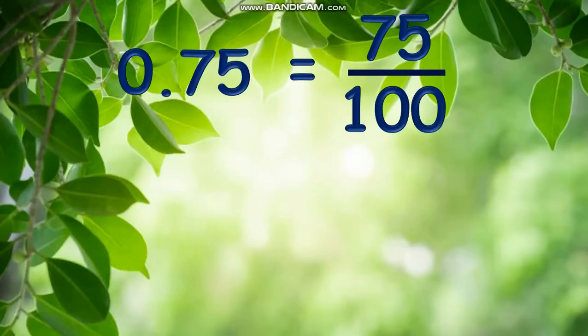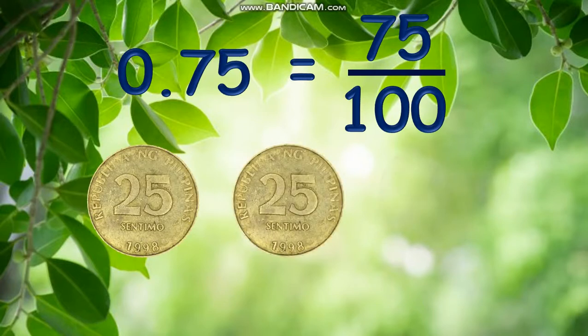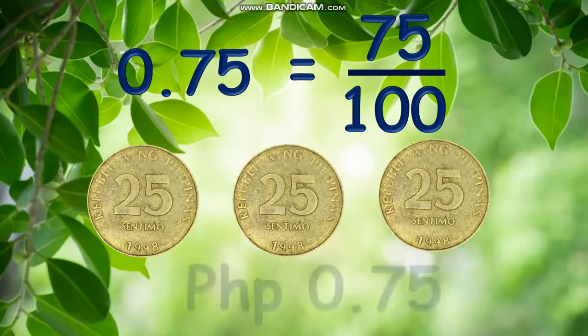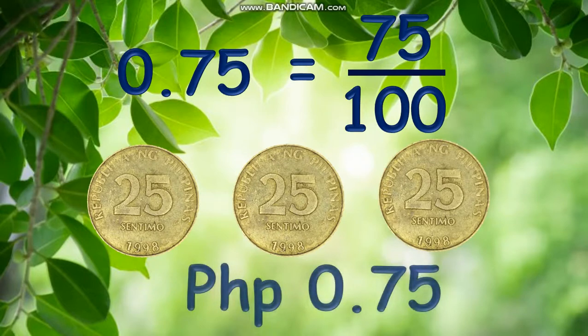How about with money? How can we visualize the decimal point 75 with money? Simply, three 25 centavos equals 75 centavos or 0 pesos and 75 centavos.